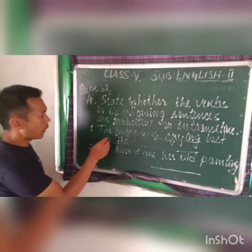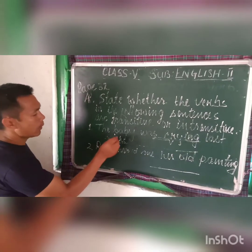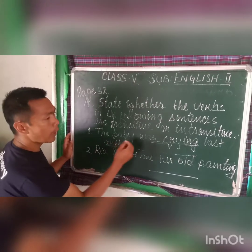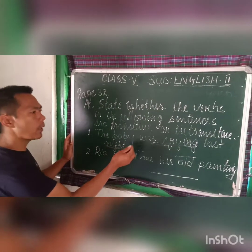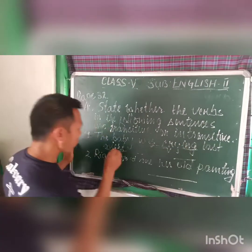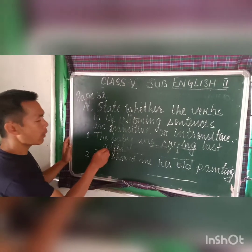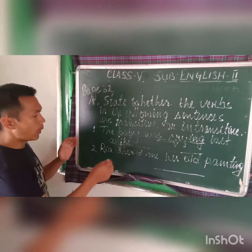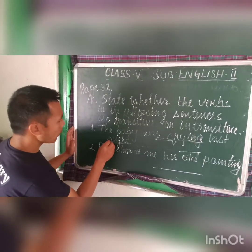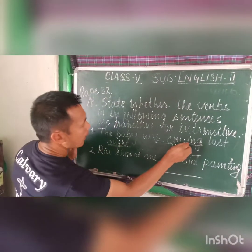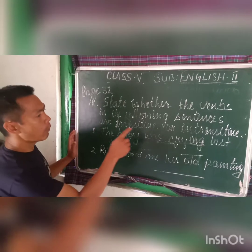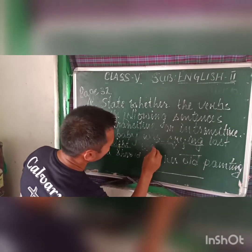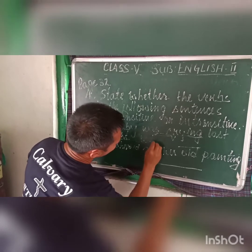The sentence is answering the question 'when' — when was the baby crying? The baby was crying last night. So 'last night' is answering the question 'when,' but not 'what' or 'whom.' Therefore, because of this reason, 'crying' is an intransitive verb. You have to write down here: intransitive.